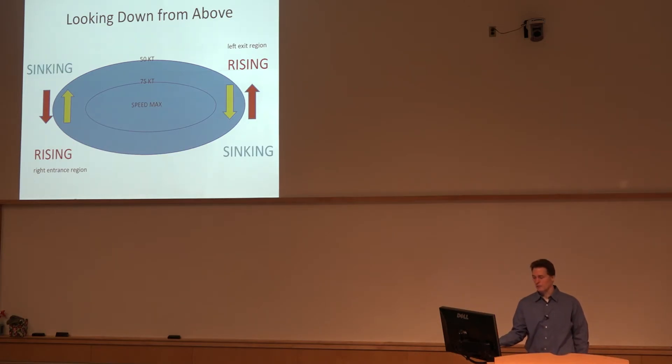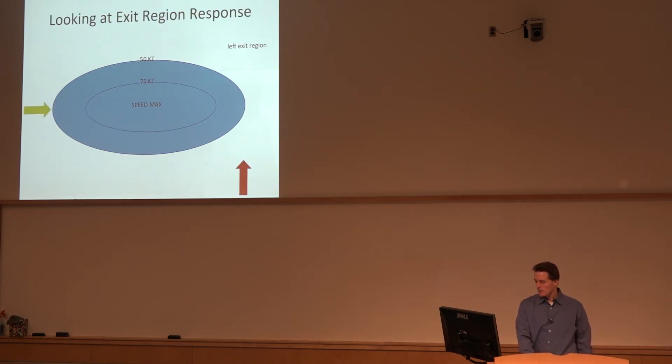This is the pure conceptual model. There are not very many jet streaks that look exactly like this in the real world. Now we've taken a completely different view. We're looking at the exit region response. As the air parcels move through, we get the ageostrophic response, and in the low levels you induce stronger low-level southerly flow. We've got a varying wind with height in that exit region.